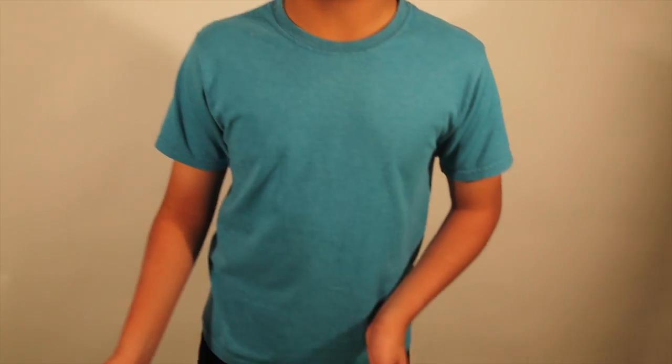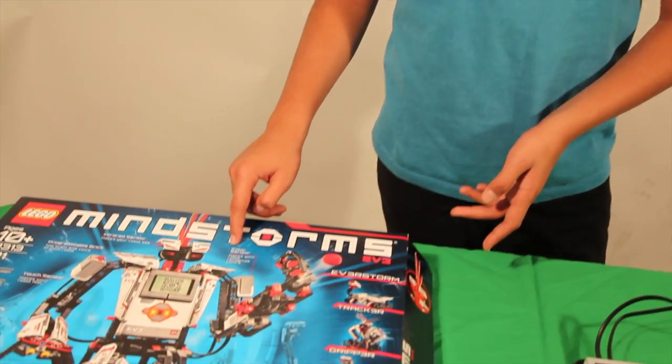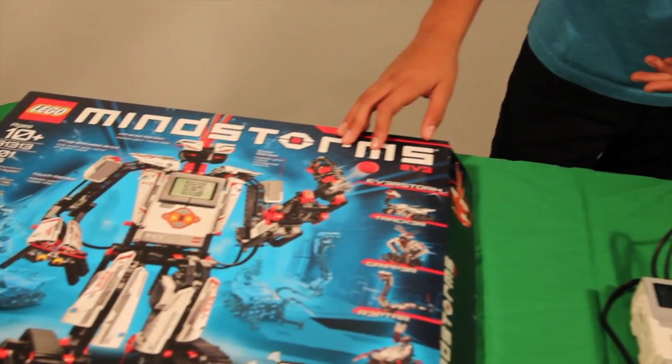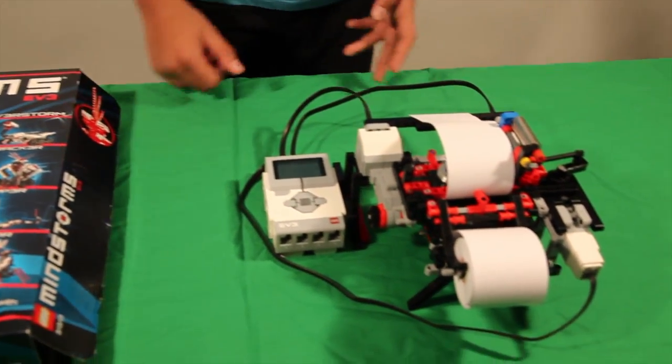To make this model right here, I took a model called the plotter that came with the set, and what we did is we modified it to make it a Braille printer.